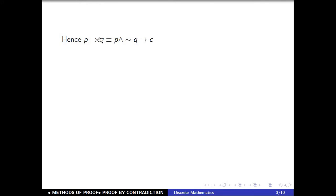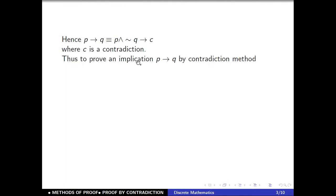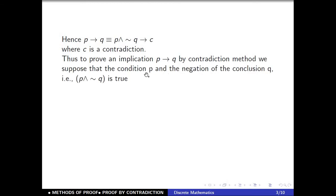Clearly, if the implication P implies Q is true, then its negation must be false, and this leads to a contradiction. Hence, P implies Q is equivalent to: P and negation Q implies a contradiction — where C stands for contradiction. To prove an implication P implies Q by the contradiction method, suppose the condition P and the negation of the conclusion Q is true, and ultimately arrive at a contradiction.